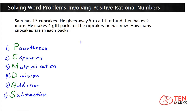This is known as PEMDAS. And if you need to remember it, you can think of the phrase: Please Excuse My Dear Aunt Sally. Because the first letter of each of those words corresponds with PEMDAS — Please Excuse My Dear Aunt Sally. So this is a good way to remember the order of operations.